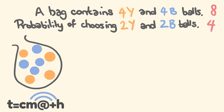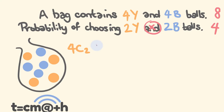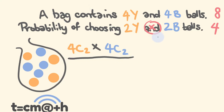Use your combinations and go through and do this. For the yellow balls, we are trying to choose two out of four. We're going to be multiplying — because we have an 'and' here. We're going to multiply this by: for the blue balls, we're trying to get two out of four blue balls. This is all going to go over, for the total, out of eight balls we are trying to get four of them.